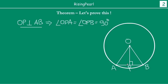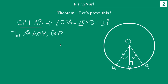Because OP is perpendicular to AB, we know these angles are 90 degrees. Now we join OA and OB. After joining these, we have two triangles. In these two triangles, we observe that OA is equal to OB — the reason being that OA and OB are radii of the same circle, so they are equal.